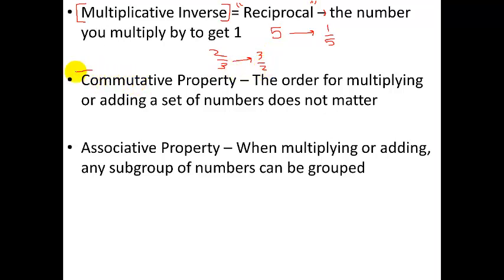Commutative property. To commute things is to change the order. The commutative property is the fact that the order for multiplying or adding a set of numbers does not matter. 3 times 2 equals 2 times 3, and any other numbers.